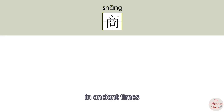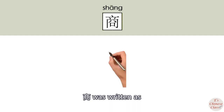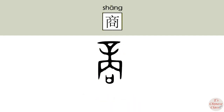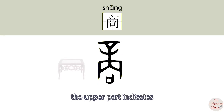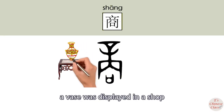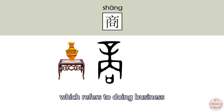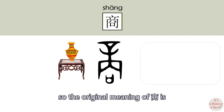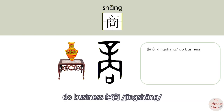In ancient times, 商 was written differently. The upper part indicates a vase displayed in a shop, which refers to doing business. So the original meaning of 商 is 'do business'.